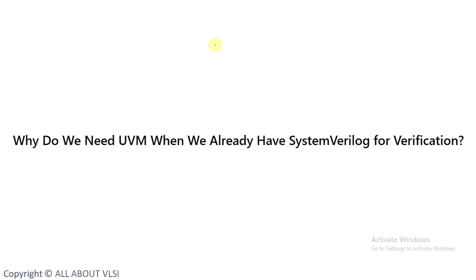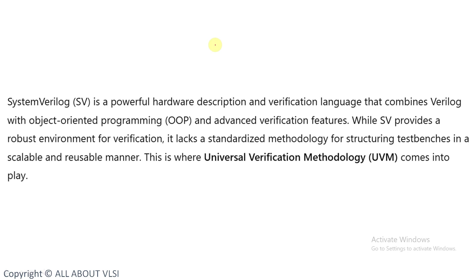Why do we need UVM when we already have SystemVerilog for verification? Basically, SystemVerilog is a powerful hardware description and verification language that combines Verilog with object-oriented programming and advanced verification features. While SV provides a robust environment for verification, it is lacking a standardized methodology for structured test benches in a scalable and reusable manner.